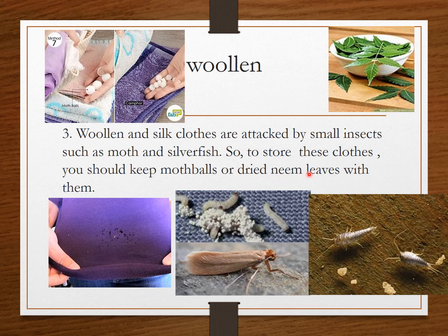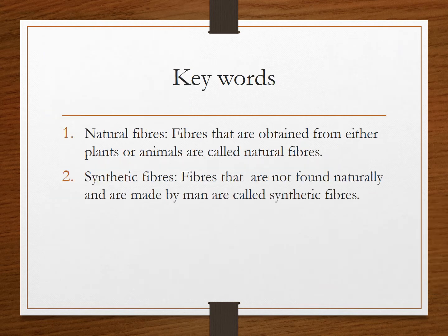One more way of keeping insects away is by using dried neem leaves. Everybody has seen neem leaves. What we do is dry these neem leaves and make small pouches — you can make small cloth pouches filled with these dried leaves — and then keep them in between your clothes. This will also keep the insects away. That's it for this chapter. Now coming to the keywords, please write these in your copy.